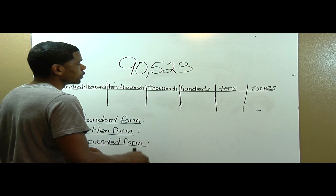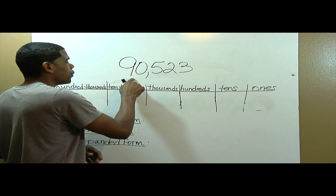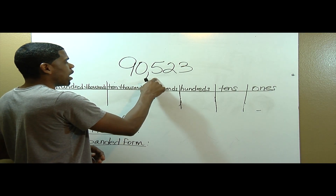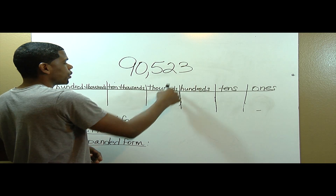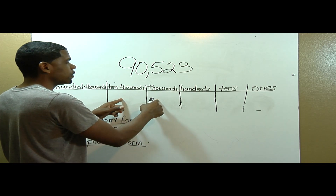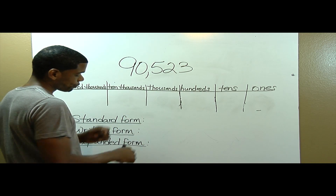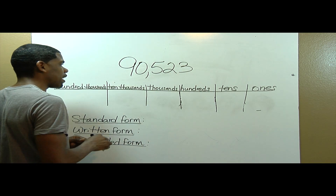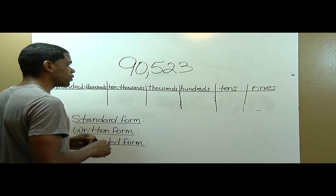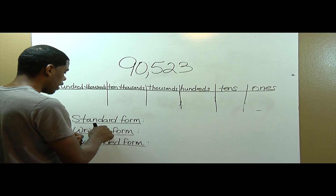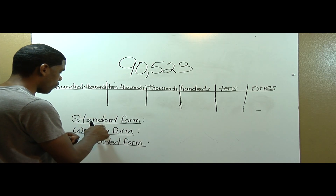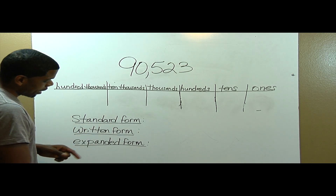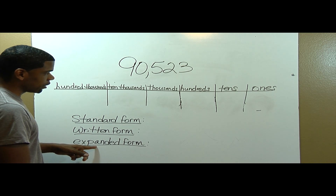In this problem, I will write 90,523 in the place value chart. From here, I will write 90,523 in standard form, written form, and expanded form.